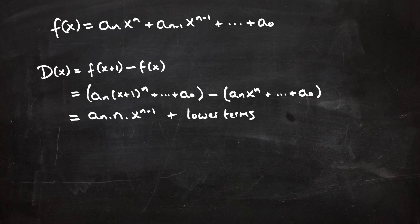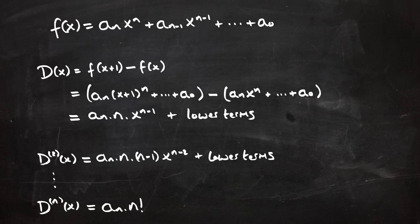If we then repeat that idea, we'll see that the second difference will be a_n multiplied by n multiplied by n minus one, x to the power n minus two, plus some lower terms. And in general then, the nth difference, so d_n of x, will be a_n n factorial, x to the power zero. Or in other words, a_n n factorial. And that is your constant. All further differences will be zero.